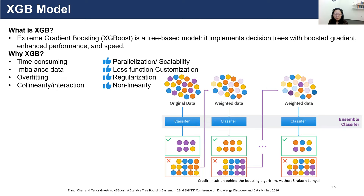Extreme gradient boosting is a tree-based model. It implements decision trees with boosted gradient, where in each iteration the algorithm learns from the errors of the previous iteration. At last, it creates an ensemble classifier thought to have enhanced performance and also faster speed.